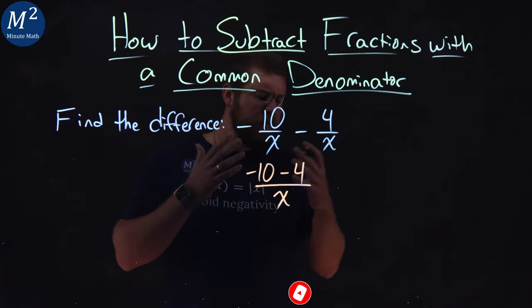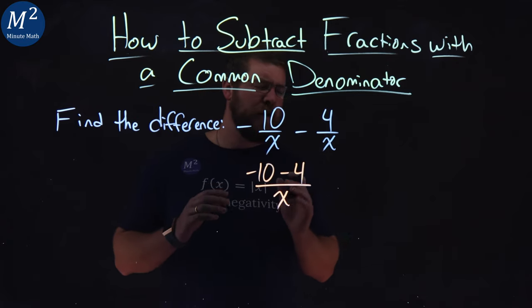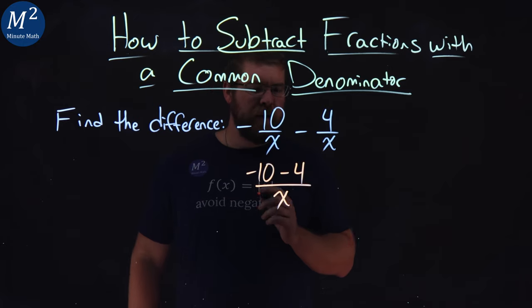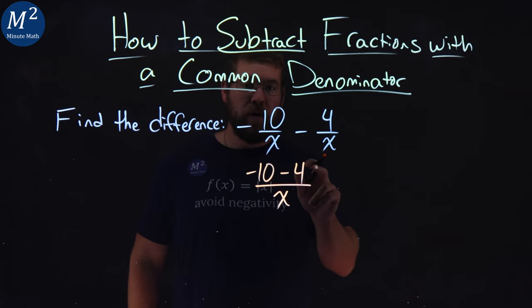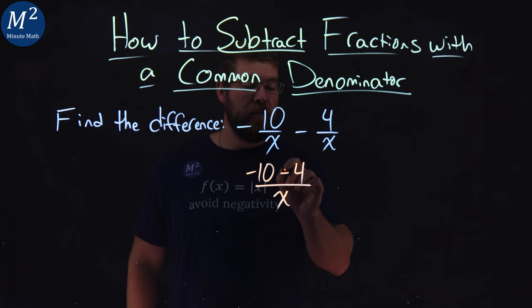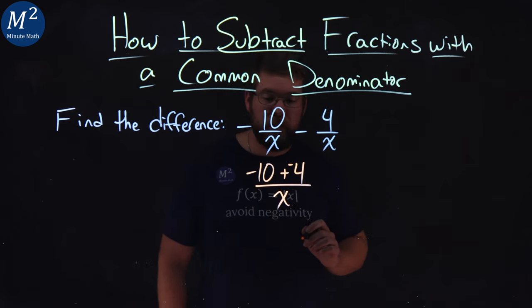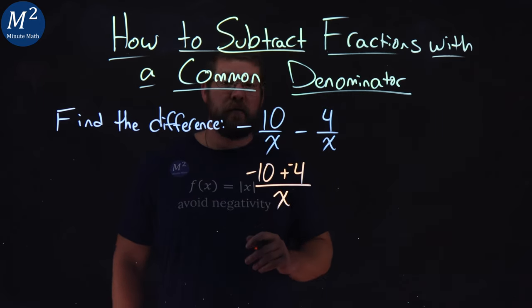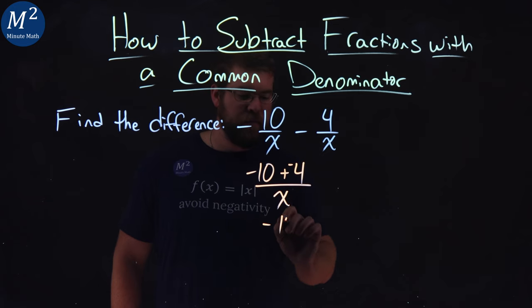Now, negative 10 minus 4, when we simplify that numerator, sometimes that can be a little tricky. The way I like to look at it is negative 10 minus a 4 is the same thing as negative 10 plus a negative 4. So now negative 10 plus a negative 4 is a negative 14 over x in the denominator.